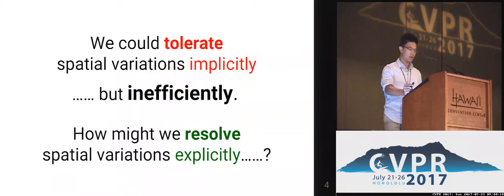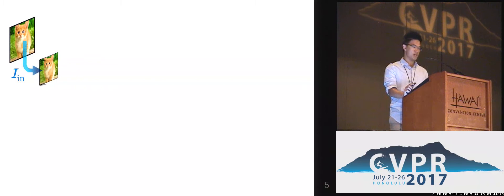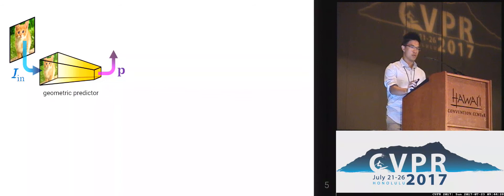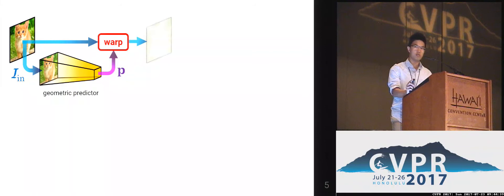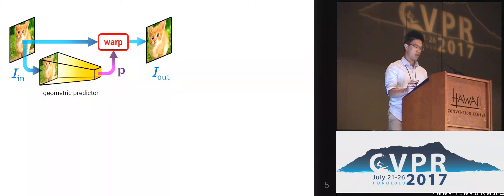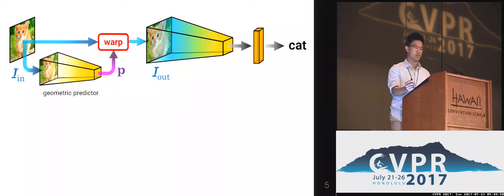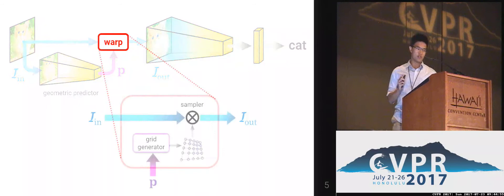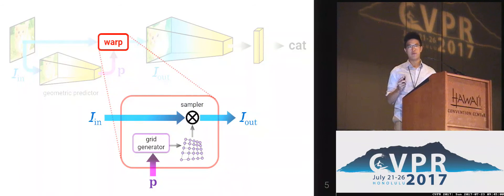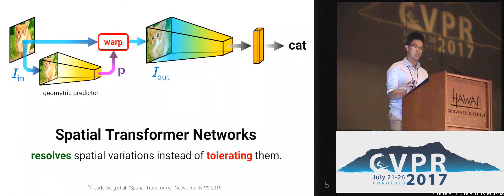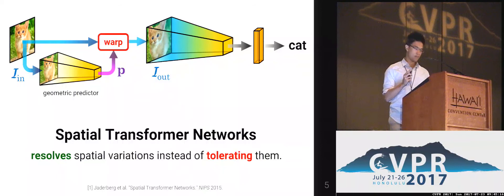Given the input image, one thing we could do is to predict some parameters for the geometric transformations. We could feed the image into a sub-network, which we call the geometric predictor, to predict some parameters for the geometric warp. And we use this geometric transformation to warp the input image, which is subsequently fed into the subsequent network, such as for classification. It has also been shown that this warp function has a differentiable expression and allows back-propagation for gradients within a deep learning framework. This is also known as Spatial Transformer Networks. A key idea is that it learns to resolve these spatial variations instead of just tolerating them, and it has been widely applied to a number of discriminative tasks.